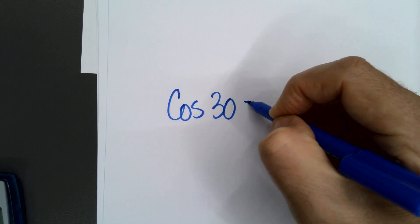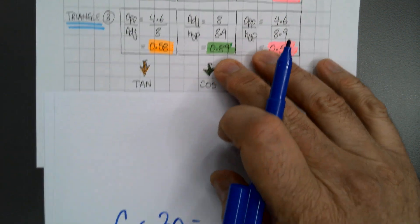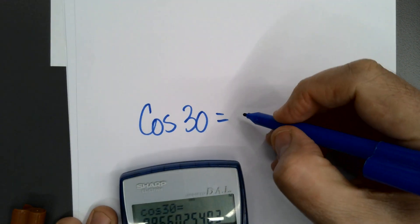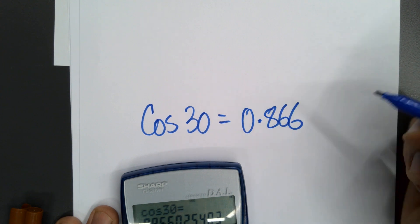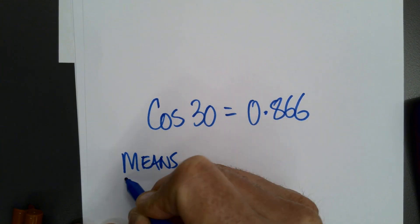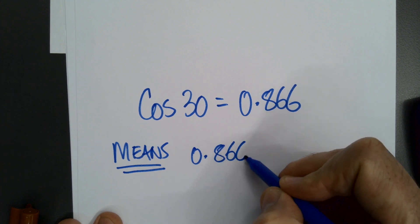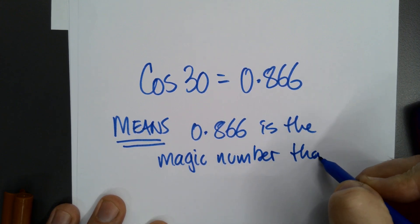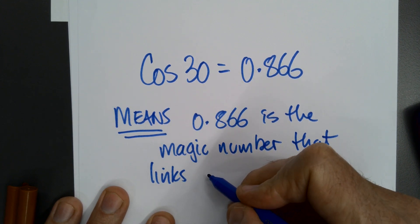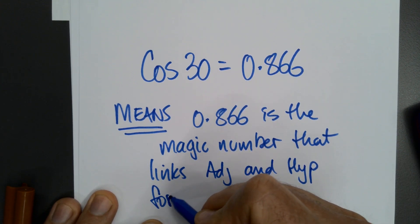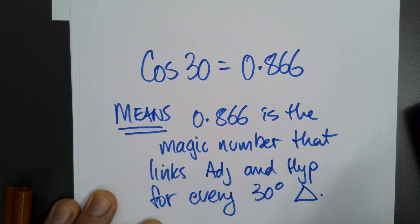If I had cos 30 - we said it's about 0.89. Let's see what the calculator says. Cos 30... oh, I'm a bit off, but anyway, according to the calculator, 0.866. Now again, that means 0.866 is the magic number that links - what's it link? It links the adjacent distance and the hypotenuse for every 30 degree triangle.